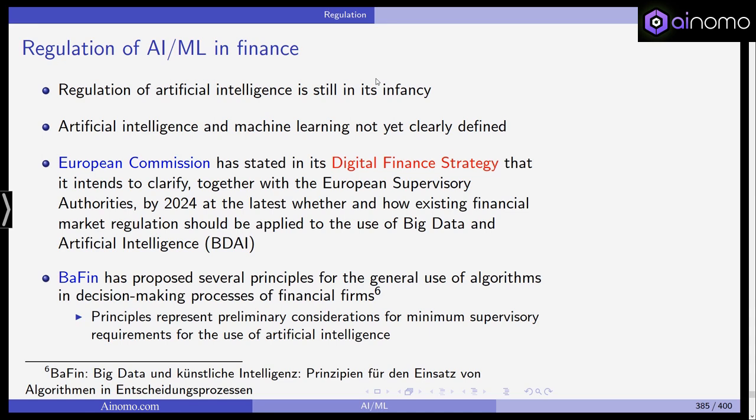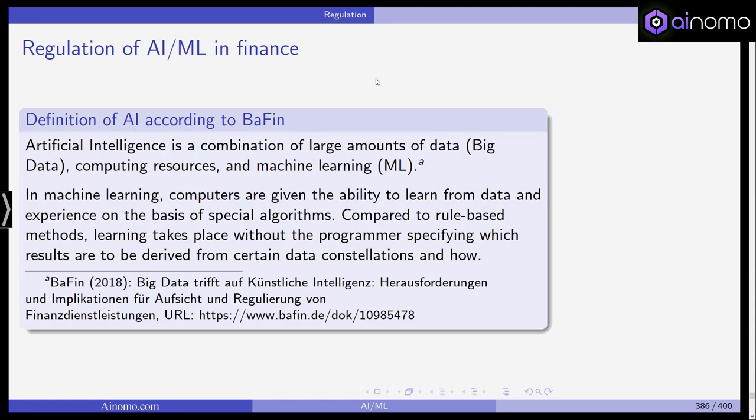You can find BaFin's document under 'Big Data und Künstliche Intelligenz.' These principles represent preliminary considerations — not yet regulation — but are first ideas for minimum supervisory requirements regarding the use of AI in supervised financial institutions. According to BaFin, artificial intelligence is a combination of large amounts of data (big data), computing resources, and machine learning. In machine learning, computers are given the ability to learn from data and experience on the basis of special algorithms, without the programmer specifying which results are to be derived from certain data constellations.